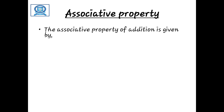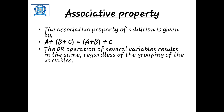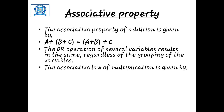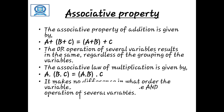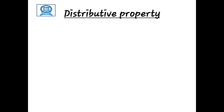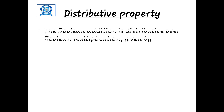The next property is called the associative property. For this we need three Boolean expressions: a, b, and c. According to the associative property, a plus (b plus c) is equal to (a plus b) plus c — that is the associative property for addition. Similarly, a dot (b dot c) equals (a dot b) dot c is the associative property for multiplication.